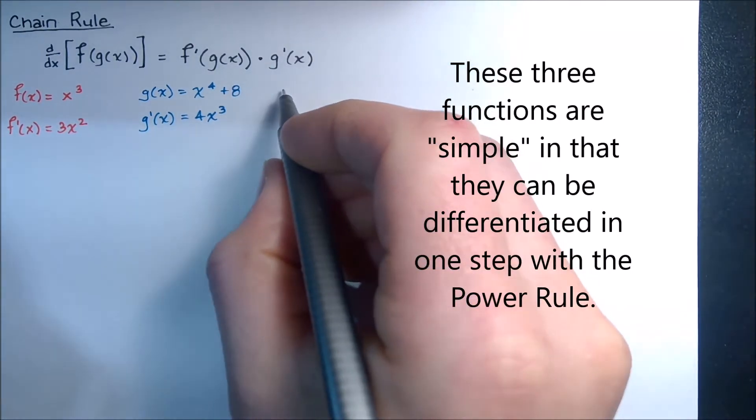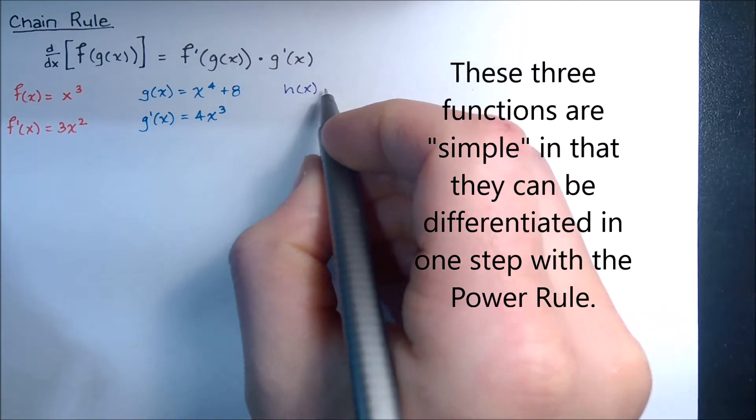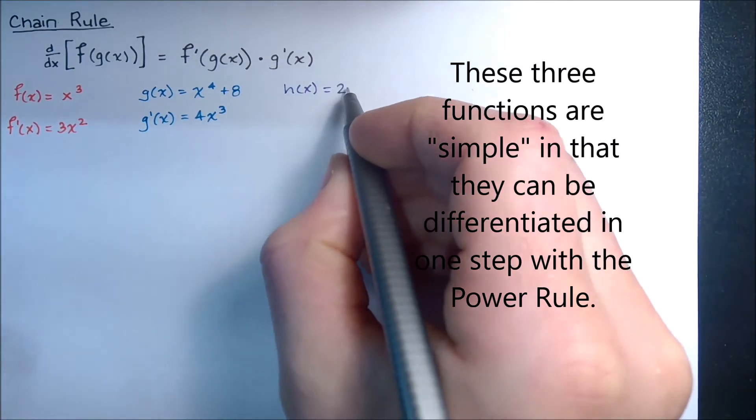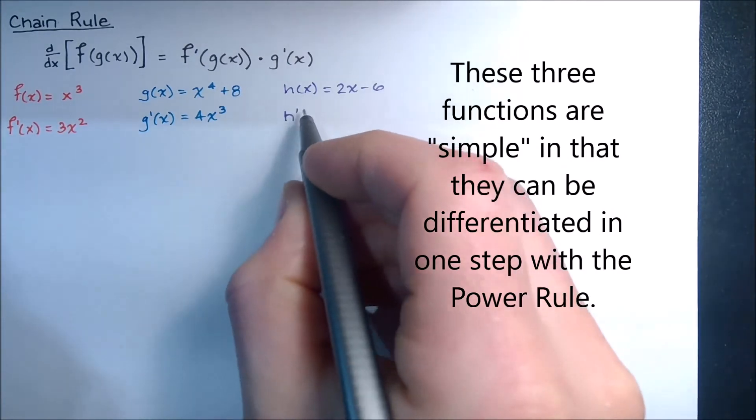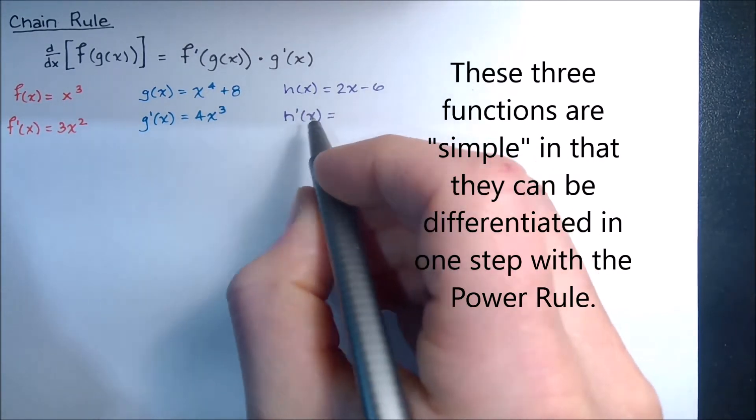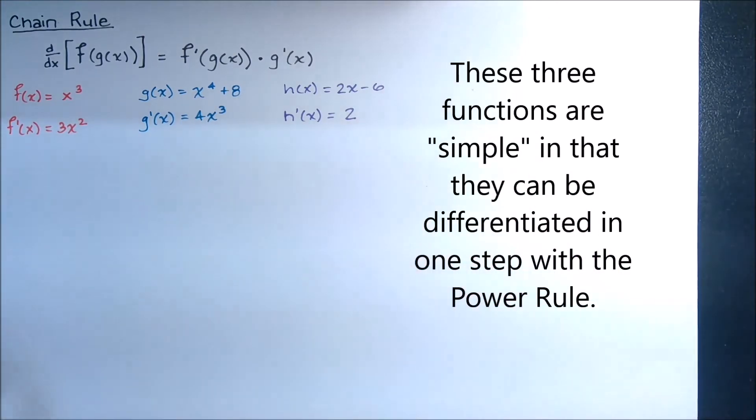And then finally, let's consider some third function, h of x, and make that equal to 2x minus 6. Again, apply the power rule, h prime or the derivative of h is just plain old 2.